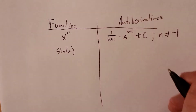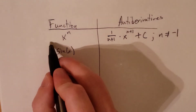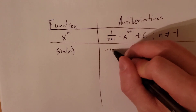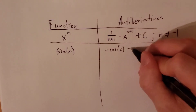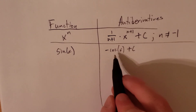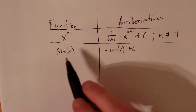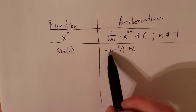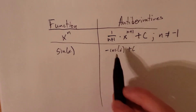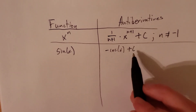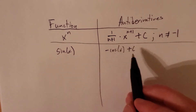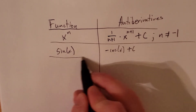What about for sine of x? If our function is sine of x, then our general antiderivative is negative cosine of x plus some constant c, because if we take the derivative of negative cosine, we get positive sine. And the derivative of negative cosine plus any constant is still just sine, since the derivative of c goes to 0.